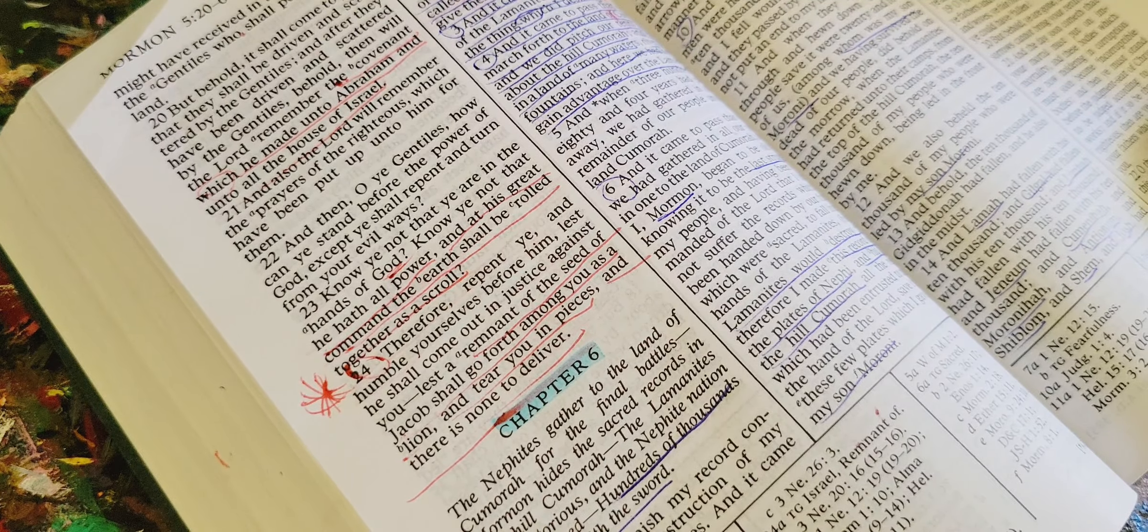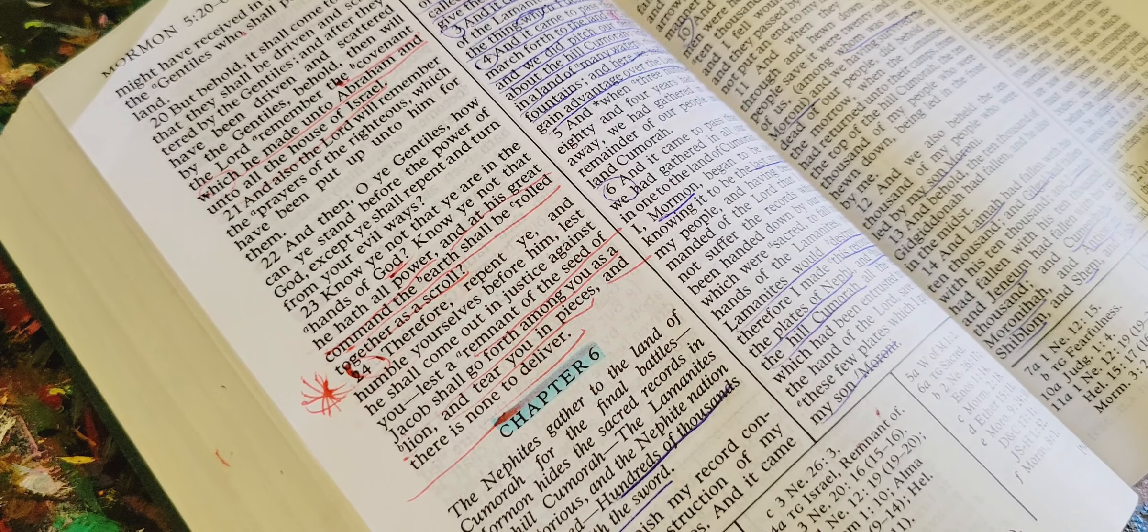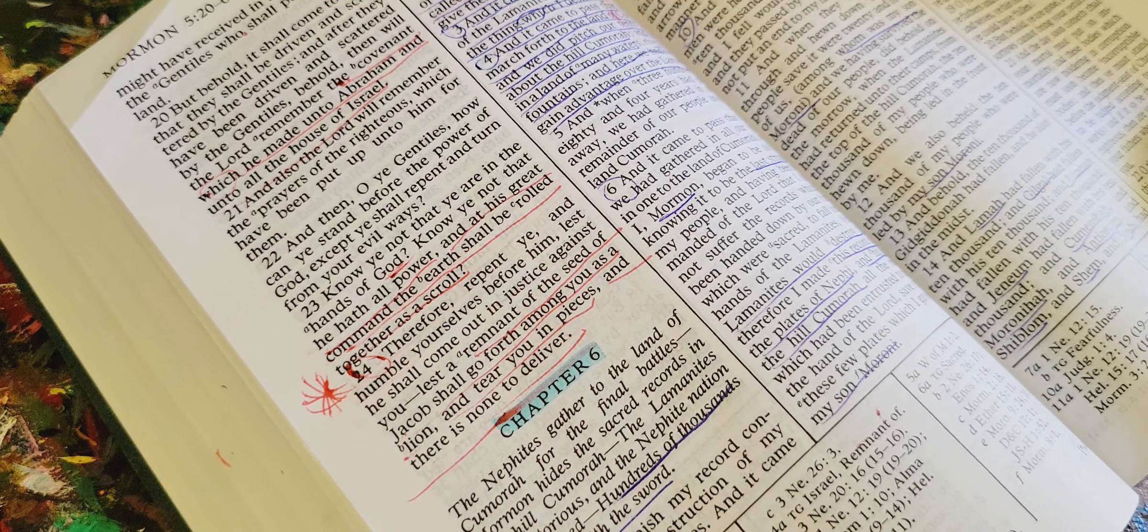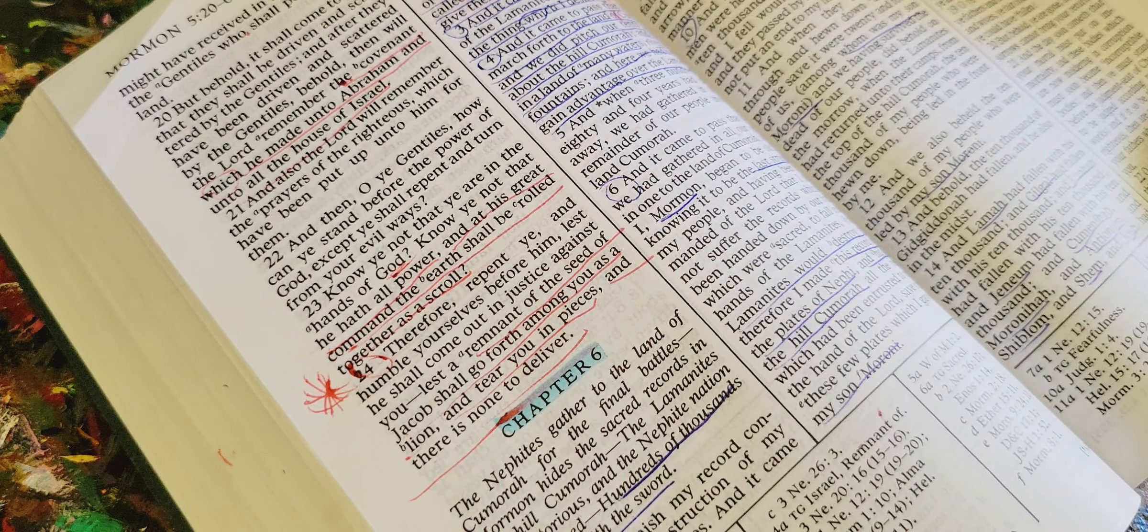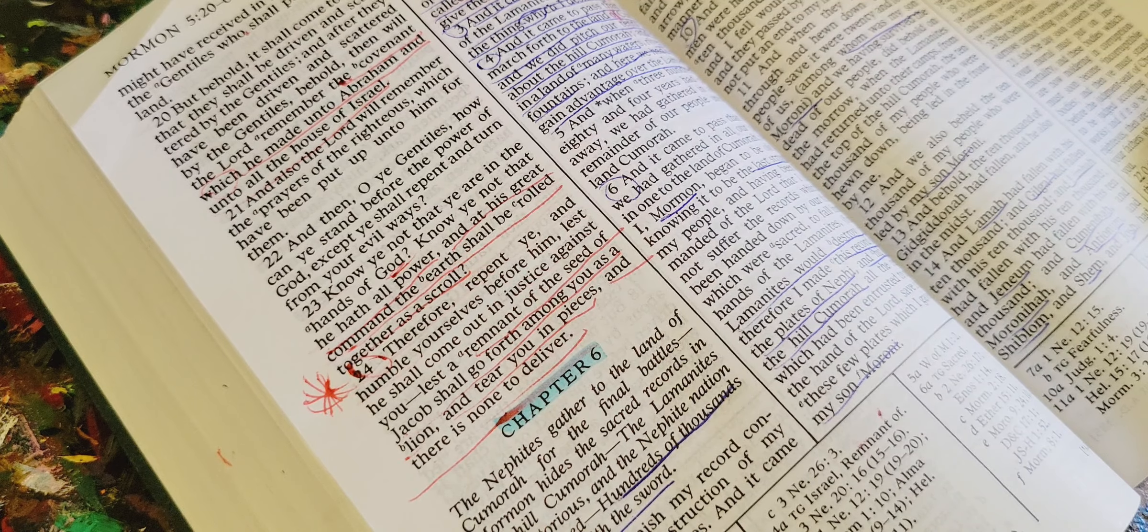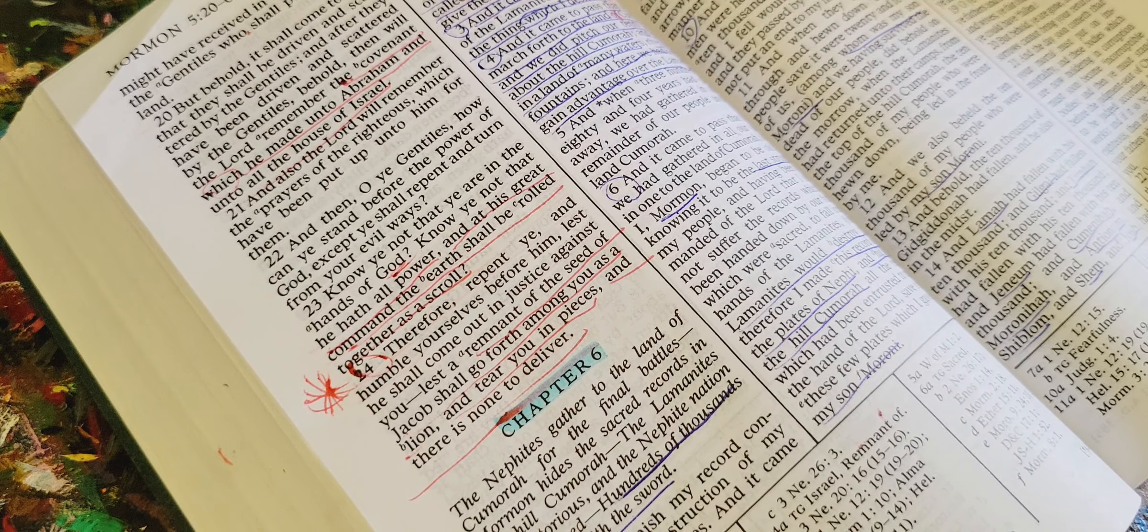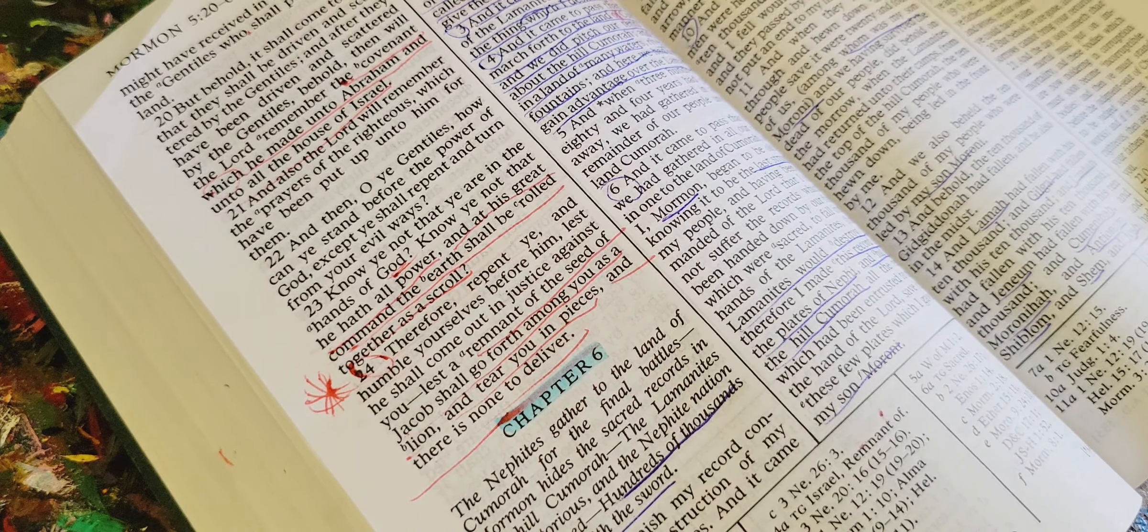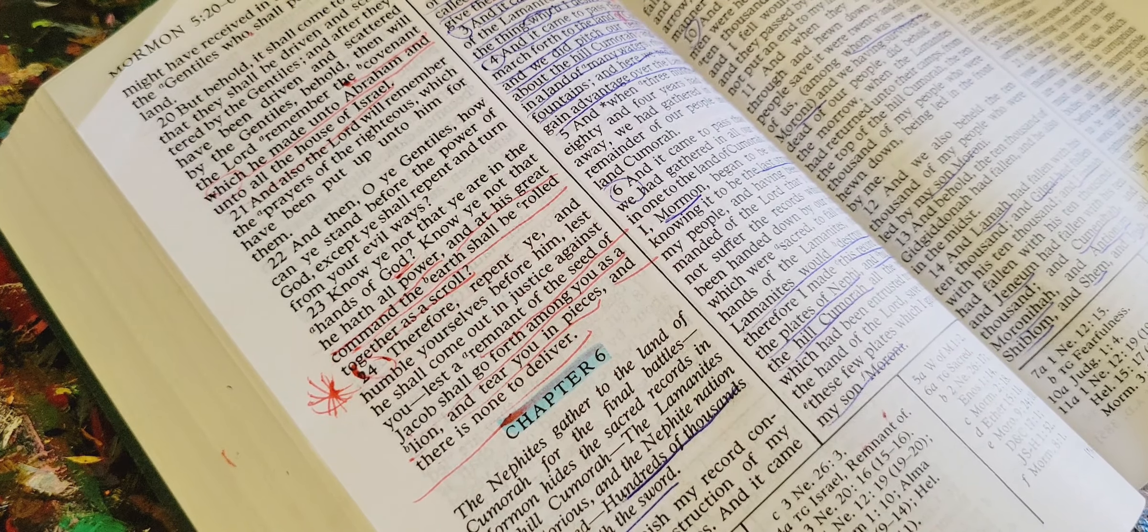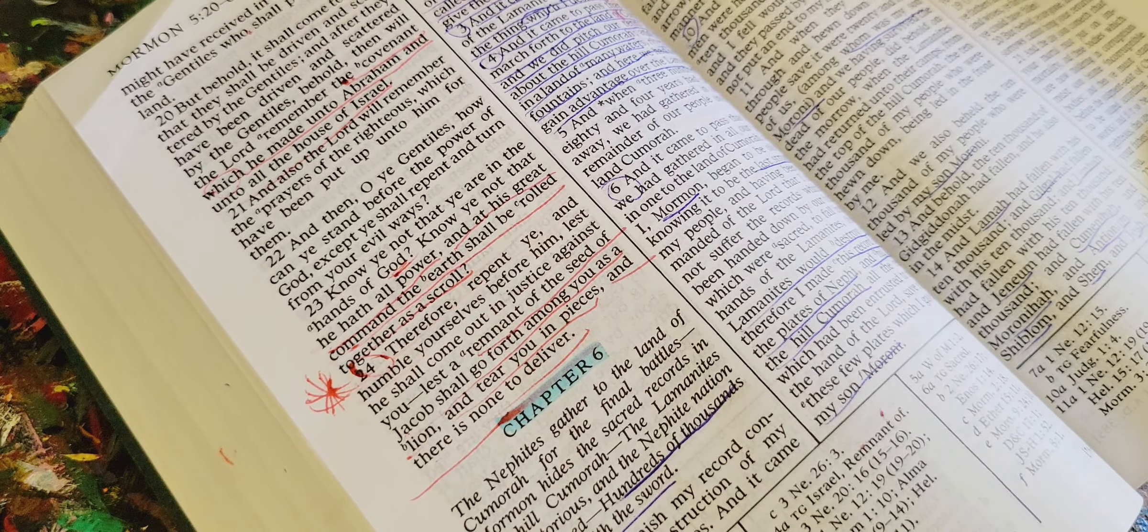And it came to pass that there were ten more who did fall by the sword, with their ten thousand, each, yea, even all my people, save it were those twenty and four who were with me, and also a few who had escaped into the southern countries, and a few who had deserted over unto the Lamanites had fallen, and their flesh and bones and blood lay upon the face of the earth. That's a pretty gruesome scene, look at that. So it's just a massacre battlefield. Being left by the hands of those who slew them to moulder upon the land, and to crumble, and to return to their mother earth.